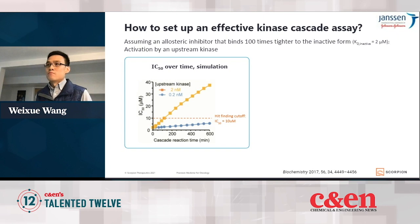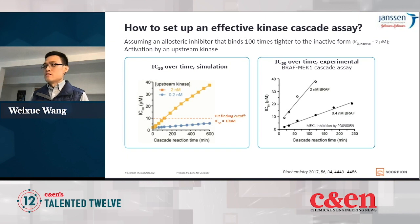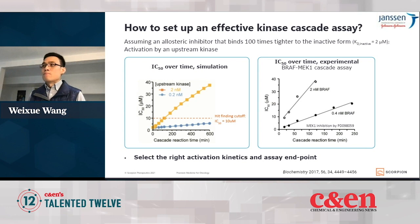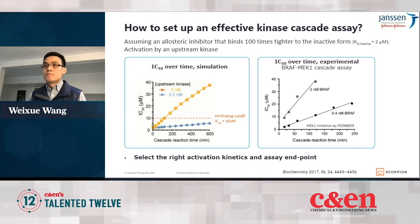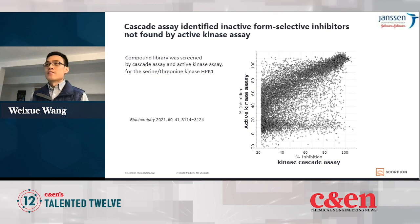We were able to confirm the simulation results experimentally using the BRAF MAC1 cascade. This is a great example showing that we need to have the right activation kinetics and assay endpoint for any effective kinase cascade assay. Otherwise, even if you have a very potent inhibitor that binds to the inactive kinase, it will appear as a very weak compound, or you may not see any inhibition at all if the assay conditions are not right. When you have all the assay conditions correct, cascade assay can identify inactive form-selective inhibitors that cannot be found by the active kinase assay.